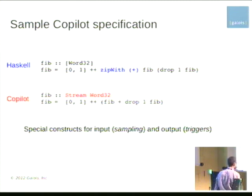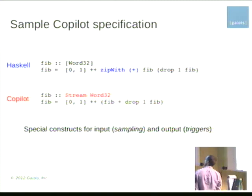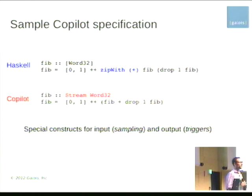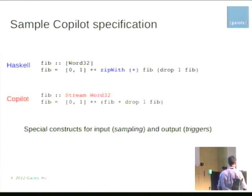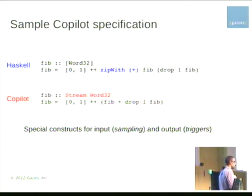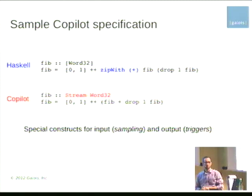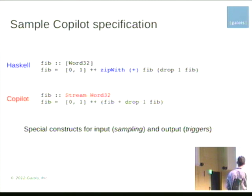We also generate our own schedulers, so we don't necessarily need to run on top of an RTOS, which allows us to run on fairly impoverished hardware. The Copilot expression language is the only code in the talk. Here is a Haskell program generating a Fibonacci sequence alongside a Copilot program. We made the surface syntax familiar to Haskell programmers so it feels like programming with lists, automatically lifting pointwise operators to the stream level — no need for zipWith or map.